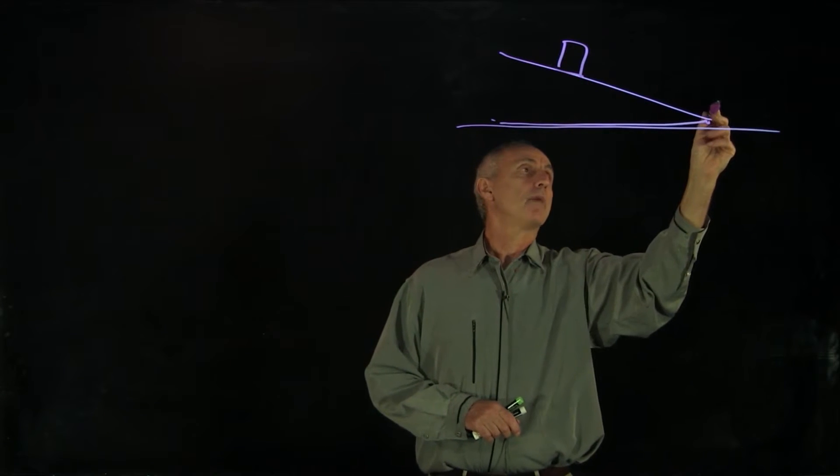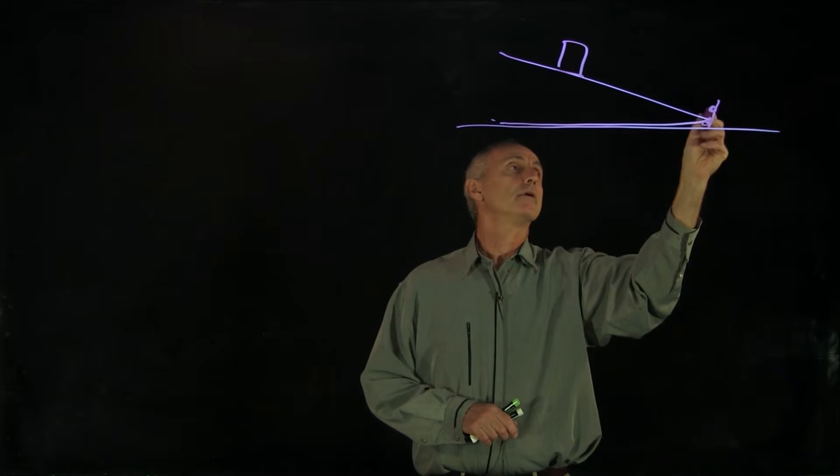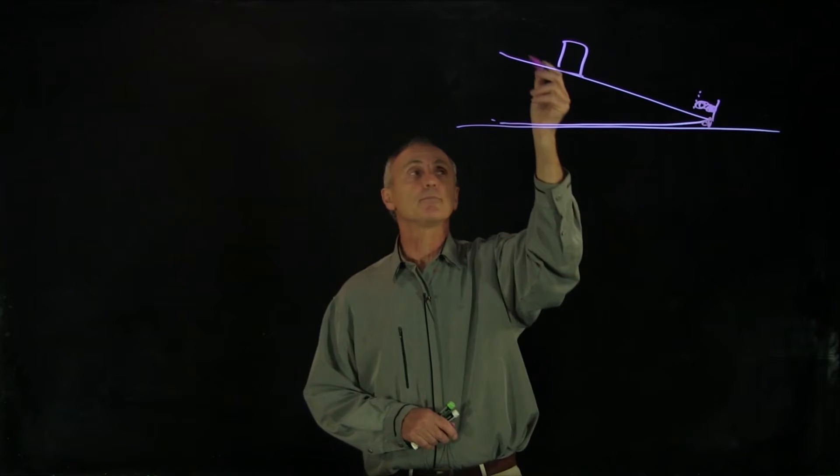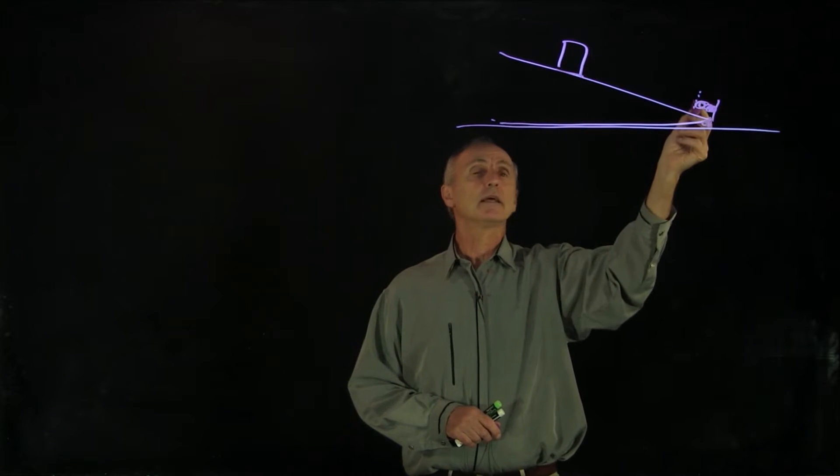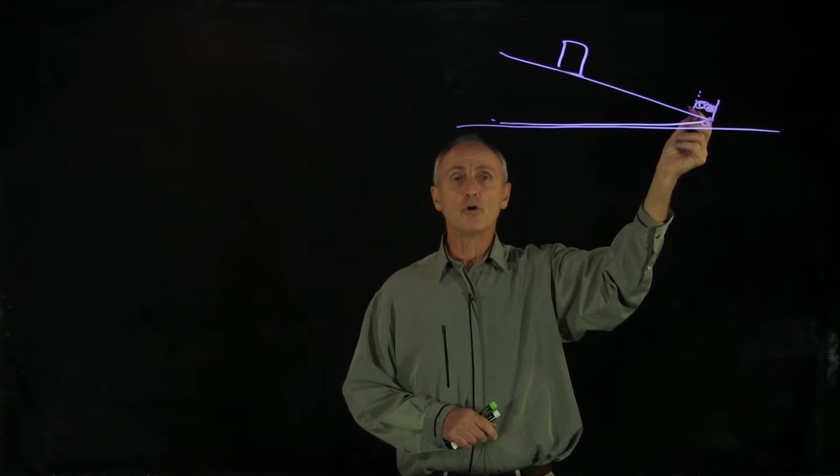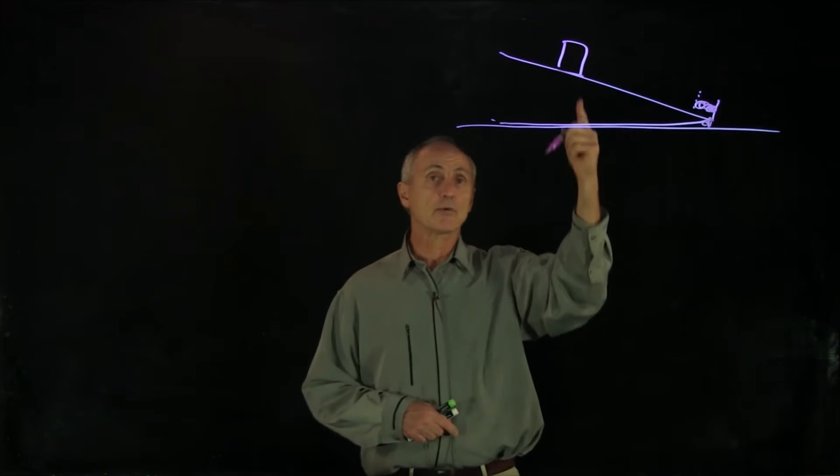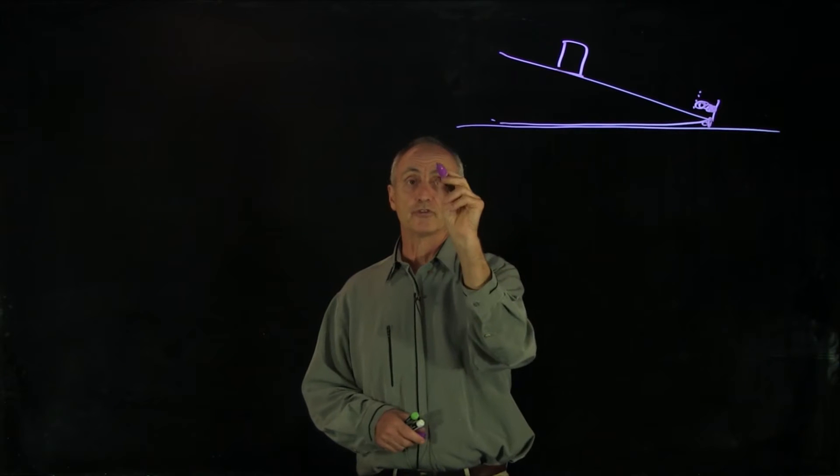Down here at the bottom of the inclined plane, there's a little bumper, which can be a spring of some type. What we have is the block sliding down the inclined plane, bouncing off the bumper, and sliding up the inclined plane. What we'd like to do is find the acceleration of the block for both cases.